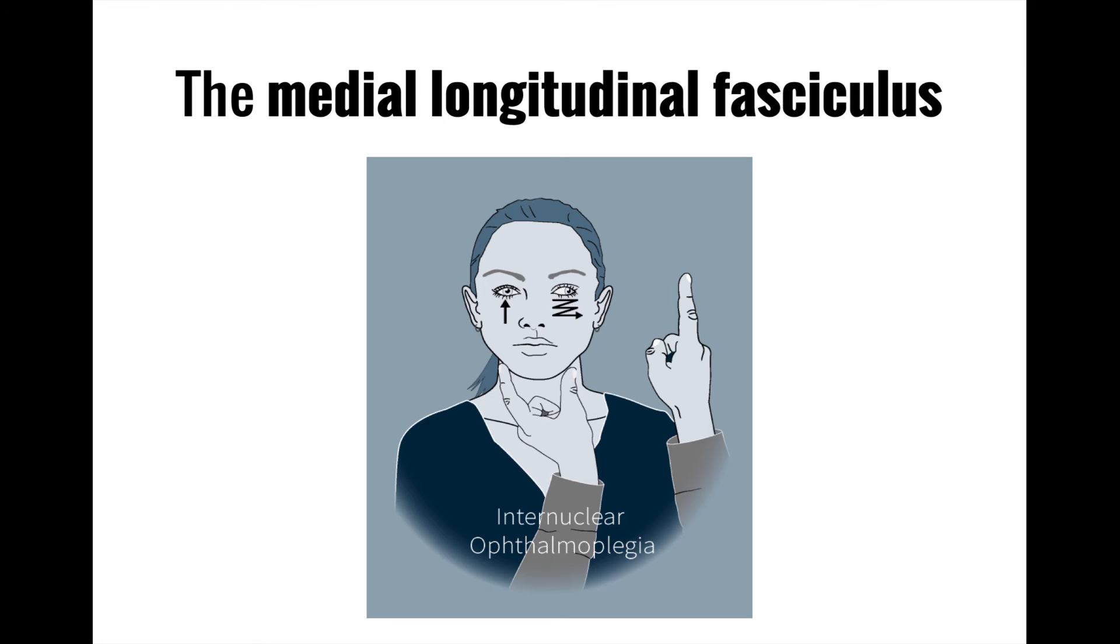Damage to the medial longitudinal fasciculus results in a condition known as internuclear ophthalmoplegia, or INO, in which the eye on the same side of the lesion cannot adduct or look inwards toward the nose. This causes double vision due to the eyes looking in two different directions.